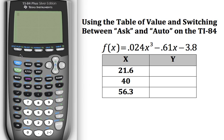So first of all you need to go and put that function into your graphing calculator. So you're going to do Y equals and then you would enter the function. So 0.024 x raised to the third power. Again, that cursor is up there in that exponent so you're going to want to arrow to the right to finish putting the function in. Minus 0.61 x and then minus 3.8.